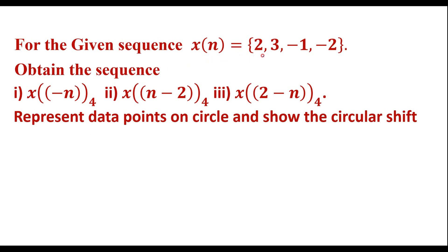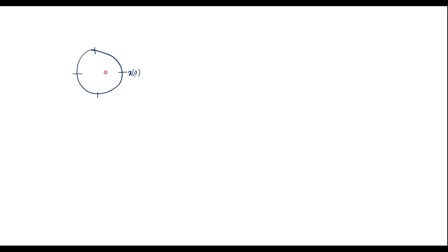For the given sequence x[n] = {2, 3, -1, -2}, obtain x[-n]₄, x[n-2]₄, and x[2-n]₄. Represent data points on the circle and show the circular shift. This is the example for circular shift. First, let me represent x[n] on a circle. We represent x[0] here, and while representing on the circle we go in the anticlockwise direction: x[0], x[1], x[2], and x[3].